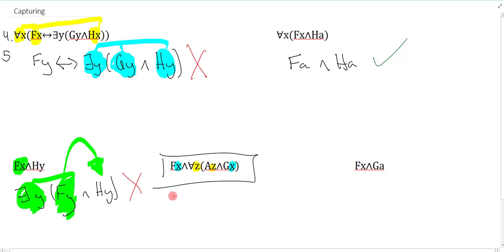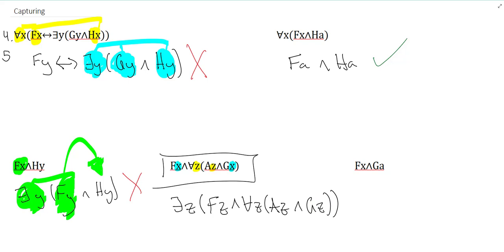I would get there exists a z, fz, and for all z, az, and gz. And of course, that means that suddenly this gz is under the scope of the universal. But that's not what I did over here. And so I've captured something under the universal.